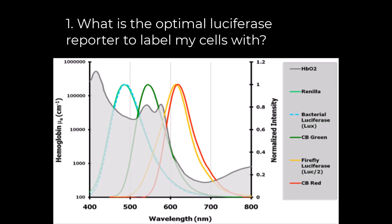So let's address the first question: what luciferase reporter should I label my cells with? Firefly luciferase is the most widely utilized luciferase reporter in the field because its emission falls within the optimal imaging window outside of peak hemoglobin absorption wavelengths. Other luciferases like ranilla and gaussia have been utilized successfully. Diluciferin is a substrate for firefly luciferase while coelenterazine is a substrate for ranilla and gaussia luciferases. Revity offers high-quality luciferin which can be ordered online. In this video we will focus on bioluminescence imaging with mainly firefly luciferase, but these strategies can be translated to other reporters.